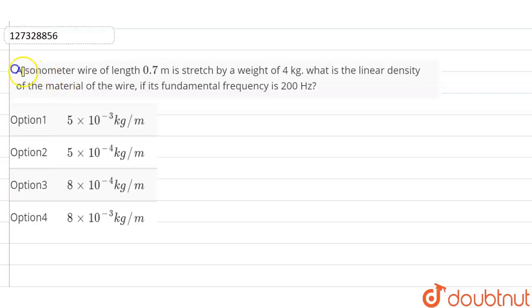Question is given that a sonometer wire of length 0.7 meter is stretched by a weight of 4 kg. What is the linear density of the material of the wire if the fundamental frequency is 200 Hz?